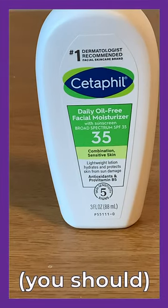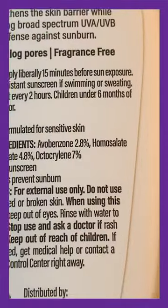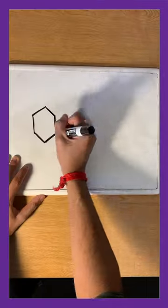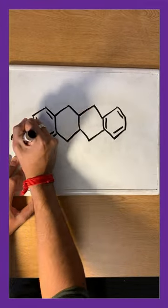Sunscreen. We all use it. But how does it keep you from getting sunburned? Most sunscreens use a bunch of chemicals to do one of two things. They either reflect the UV light coming from the sun, or directly absorb it and dissipate that energy in the form of heat.